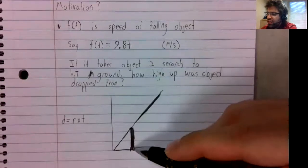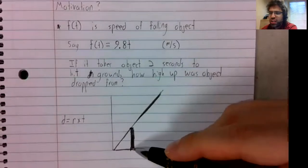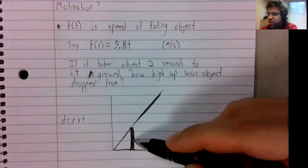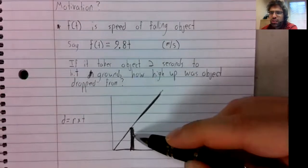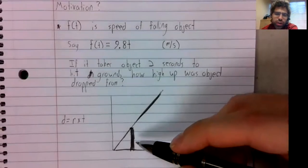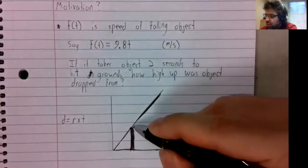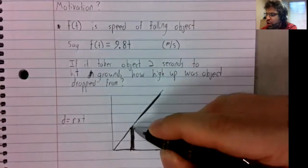The distance traveled on this interval is very close to the area under this rectangle, which is very close to the area under the curve.